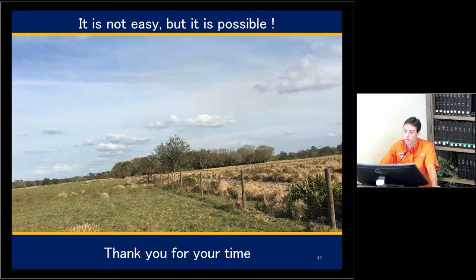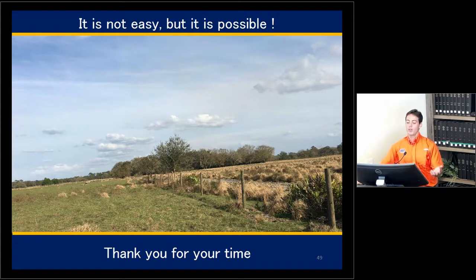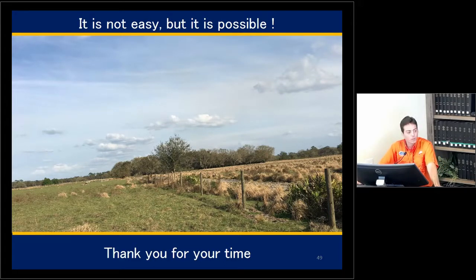Q: How quickly does smudge grass produce viable seeds after flowering? A: About 16 days from flowering, viable seeds are present. The issue is that flowering does not occur uniformly — on the same plant, you can have mature seed, immature seed, and shattering seed occurring at the same time, making it very difficult to time interventions effectively.